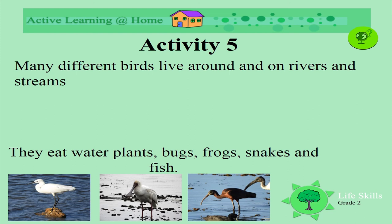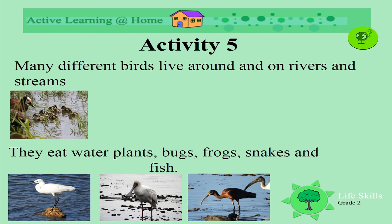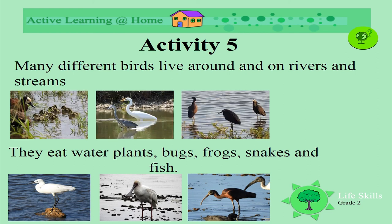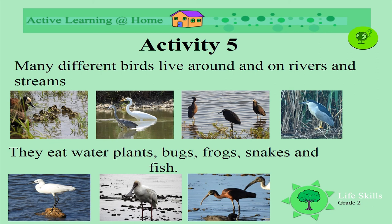Many different birds live around our rivers and streams. Look how different their beaks and bills are, and how long their legs are so they can walk in the water. They eat water plants, bugs, frogs, insects, and fish. See how their plumes and feathers are different to other birds — they all seem to have long beaks.